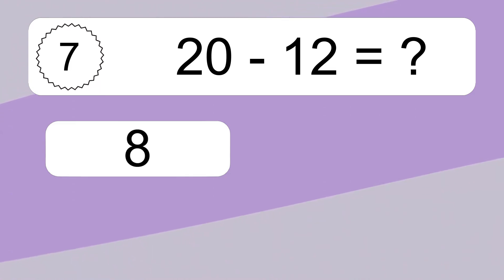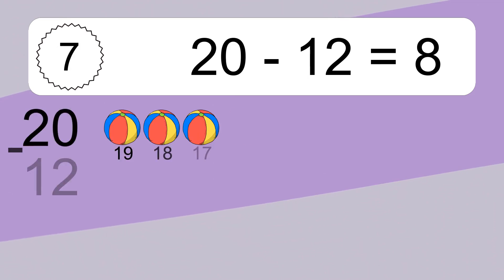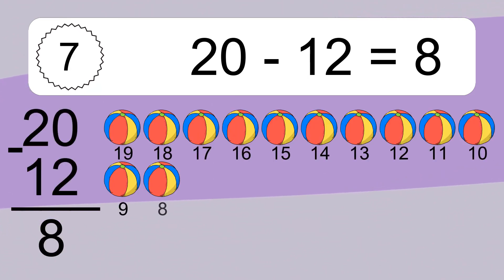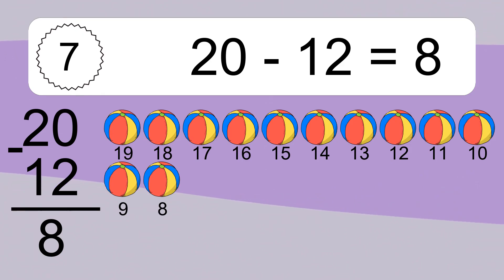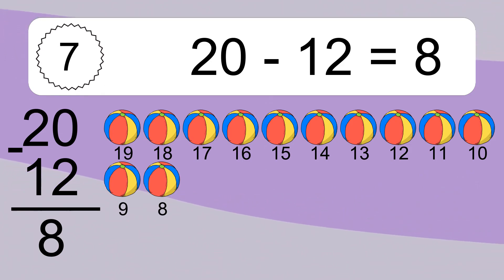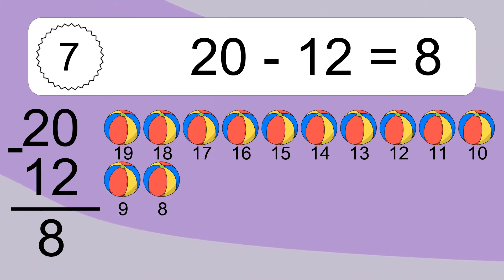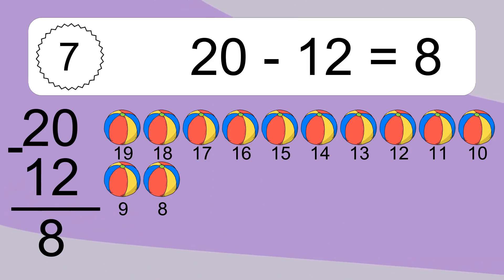20 minus 12 equals what? 20 minus 12 equals 8. Let's count it: 19, 18, 17, 16, 15, 14, 13, 12, 11, 10, 9, 8.